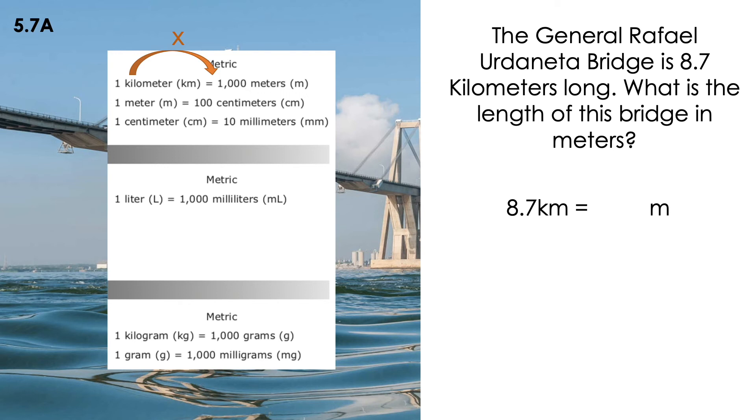I am going from greater to least, so that means I am multiplying. Whenever I create my input-output table, I'm going to write down my relationship: 1 kilometer equals 1000 meters. So that means I have to multiply by 1000.